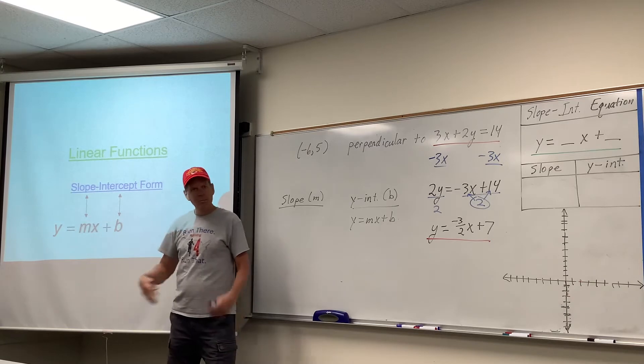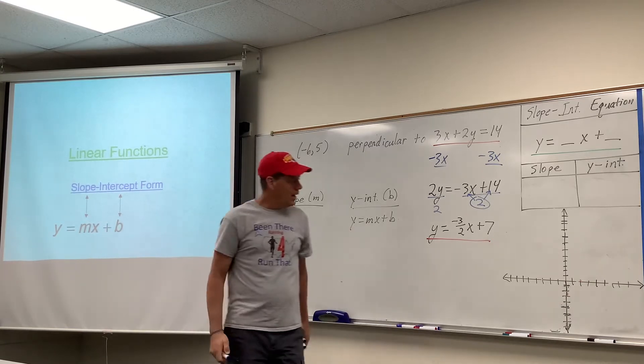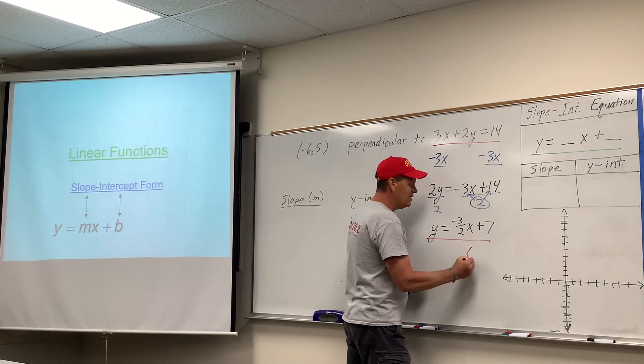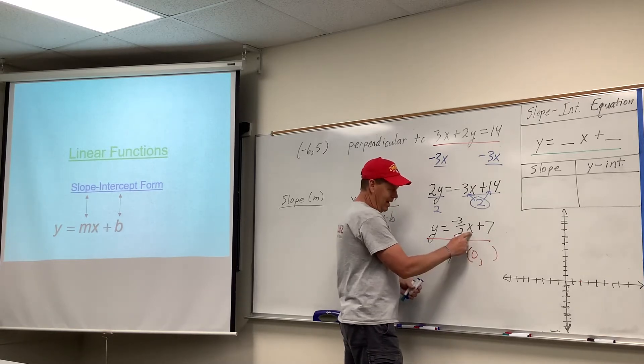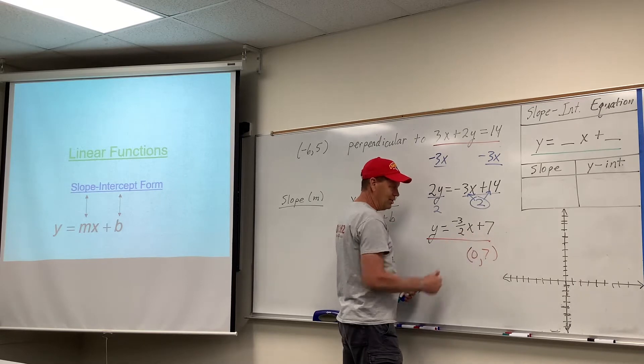And again, the purpose in rearranging it is to make it easy to graph it, find our beginning point, and then move to another from there. B, beginning point, M, move to another. So anyway, the ordered pair that's easiest to find here would be to plug in 0 for x, and y would equal 7. That number's sticking on the end.